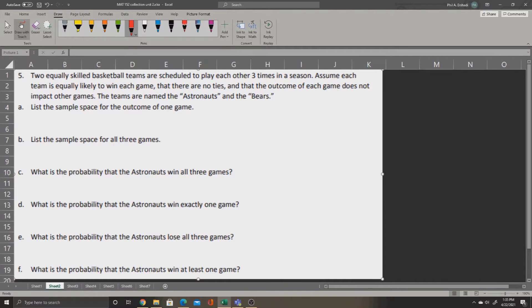First, we are asked to list the sample space for the outcome of one game. For one game, there are only two outcomes, either the Astronauts win or the Bears win. So we can say that there are two outcomes, and we can put them inside a pair of brackets. We can say if the Astronauts win, let's call it A, and if the Bears win, we call that B. So the sample space would be A or B.